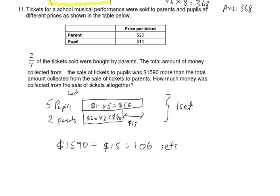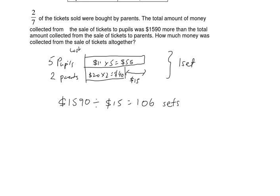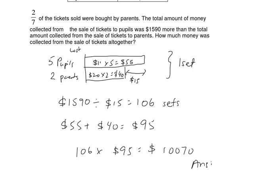How much money was collected from the sale of all tickets altogether? The price of one set is $55 plus $40 equals $95. The final step: 106 times $95. The answer is $10,070. This is a very simple question about sets. We should have done it multiple times — you must be able to solve these questions.